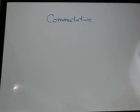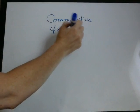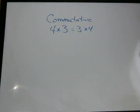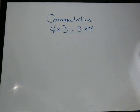This is for addition and multiplication. All this really means is that 4 times 3, for example, is the same thing as 3 times 4. The order that you put these in really doesn't matter for multiplication. 4 times 3 is the same as 3 times 4.